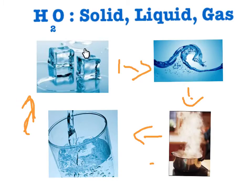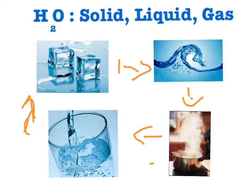When ice melts, it turns into water. When water evaporates, it turns into steam. When steam cools down, it turns into a liquid — that is called condensation. When water freezes, it turns into ice.